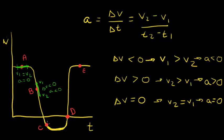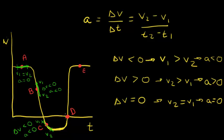At point C, we do the same thing — we draw a tangent line. Our initial velocity, even though it's negative, is still greater than our final velocity. So our overall change in velocity is less than zero. Therefore, our acceleration is also negative, or less than zero.